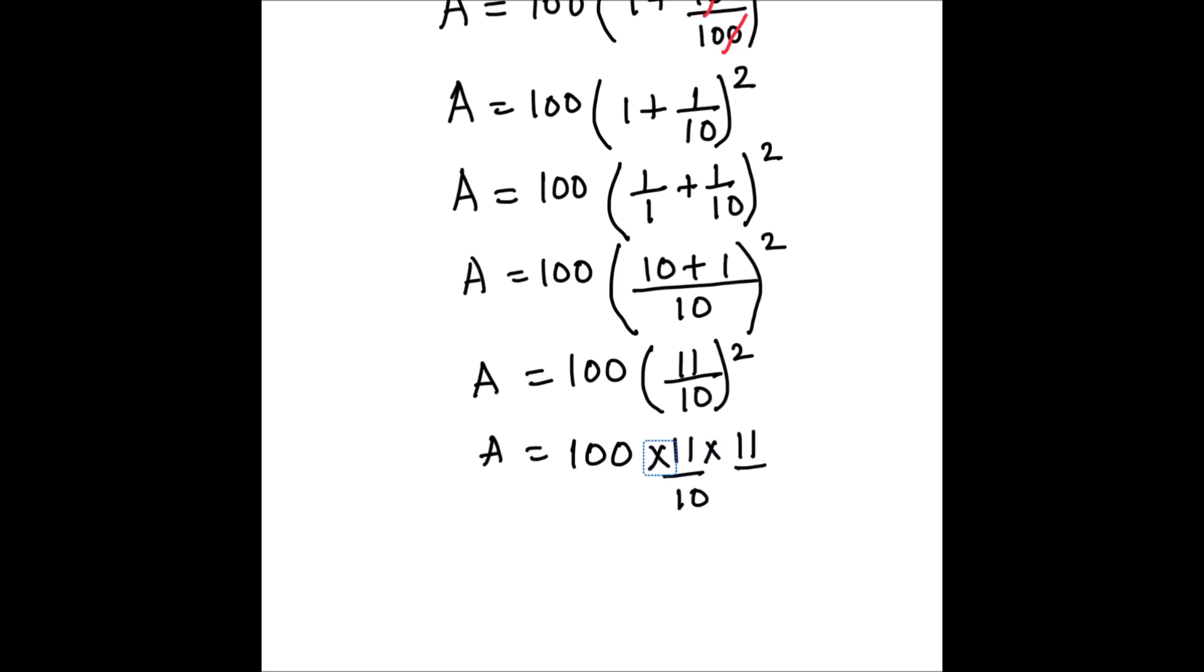Amount will be 100 times 11/10 times 11/10, because it's squared. Amount will be equal to - these two zeros in the denominator get cancelled with the zeros of 100 - so we now have 11 times 11 in the numerator, which is 121. So amount comes out to be 121.